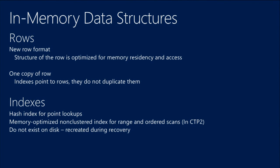We have two types of indexes. One is available in CTP1, the other will become available in CTP2. Hash indexes are particularly suited for point lookups — if you want to do an equality seek, hash indexes will give you the best performance because in the ideal case you need only two hops to get to your row. Non-clustered indexes for memory-optimized tables look a bit like B-trees but are not exactly the same — they have variable size pages and are self-maintaining, so you don't need to do any reorganizing or rebuilding.